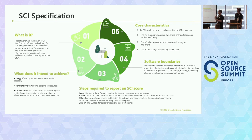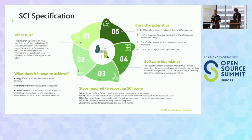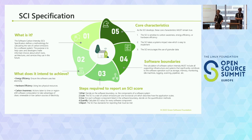To go back to the point of what the SCI is — this is a methodology for calculating the rate of carbon emissions for any software system. Using these five steps, we can calculate the SCI and use that as a baseline to compare against other applications and pieces of software. The aim would essentially be to reduce the software carbon intensity of any piece of software or development that we are building.